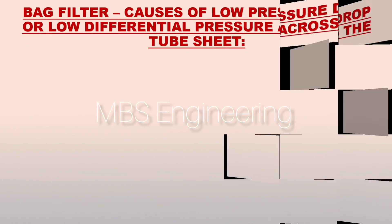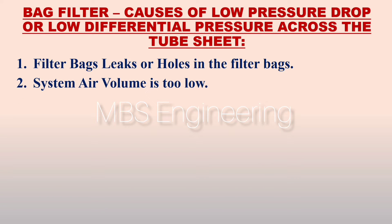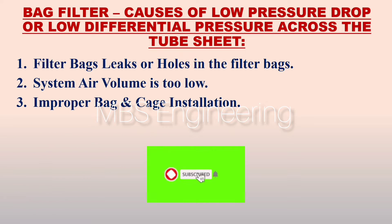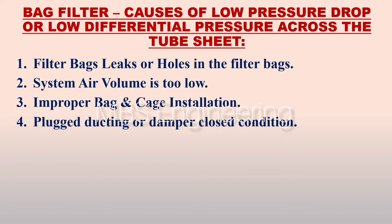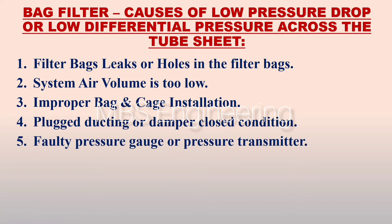Next, we will discuss the causes of low pressure drop or low differential pressure in the bag filter or baghouse system, and how to resolve them. The main causes are: Point 1, filter bag leaks or holes in the filter bags; Point 2, system air volume too low; Point 3, improper bag and cage installation; Point 4, plugged ducting or damper closed condition.